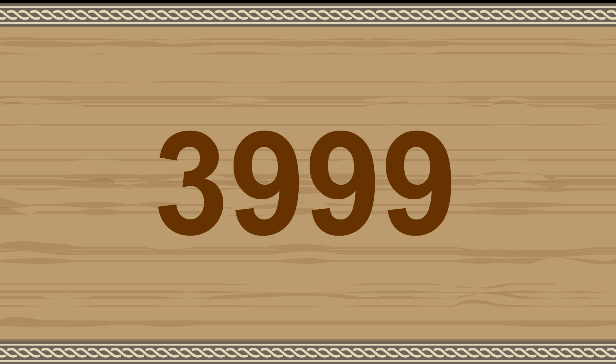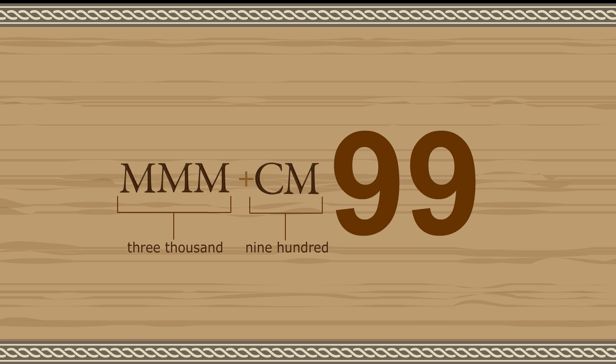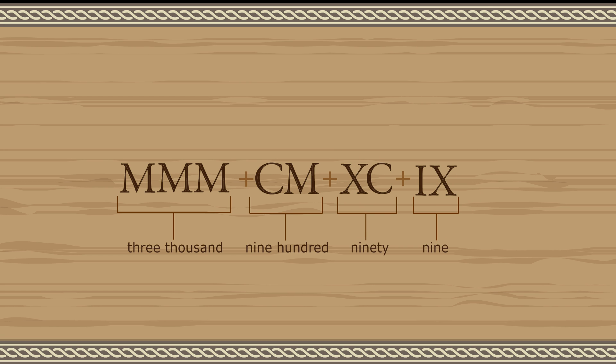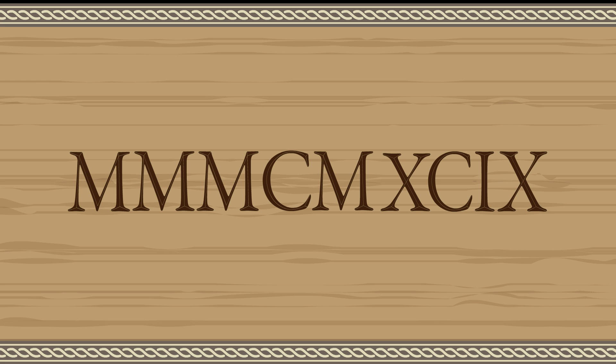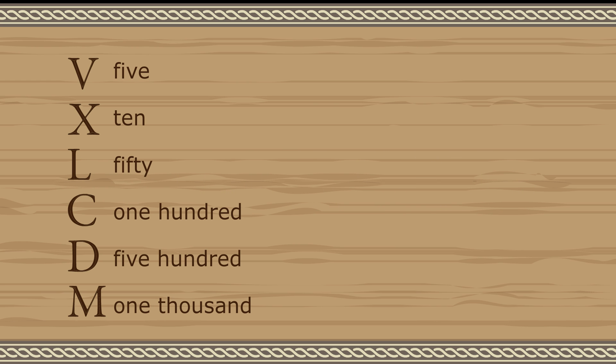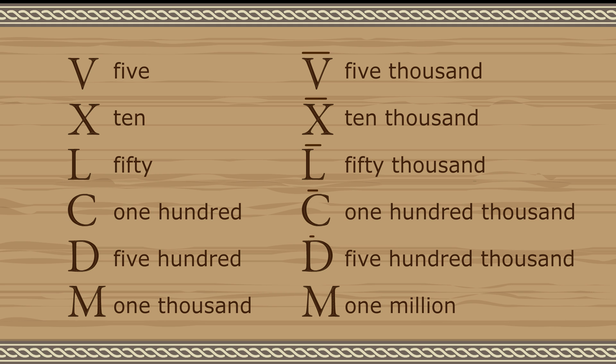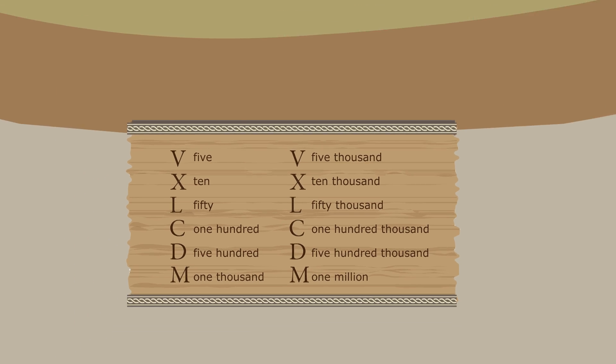For example, this number is written as 3000, plus 900, plus 90, plus 9. The Romans rarely needed numbers larger than this. When they did, they used the standard symbols with a bar over them to indicate a value 1000 times greater.